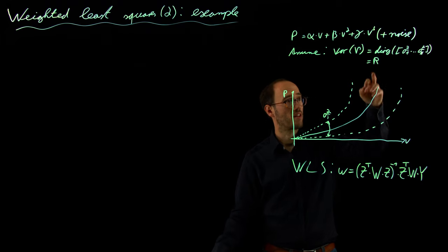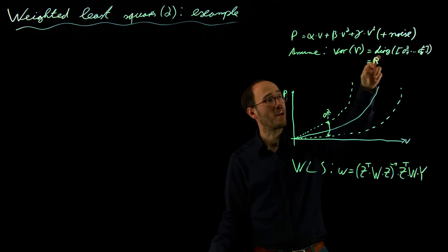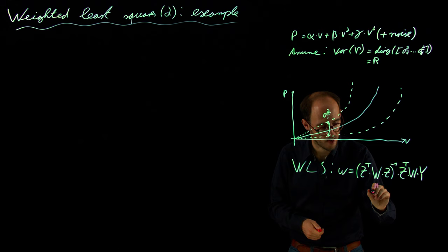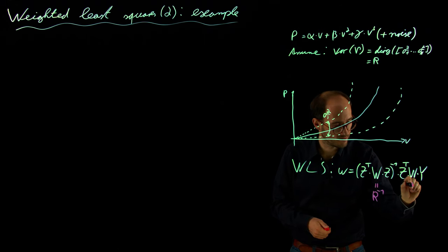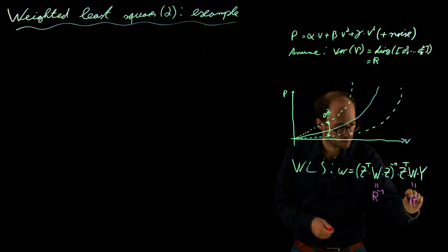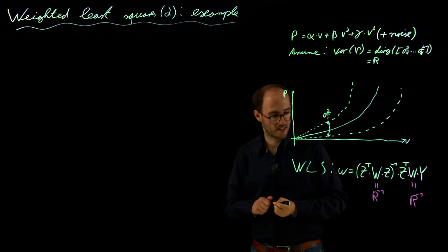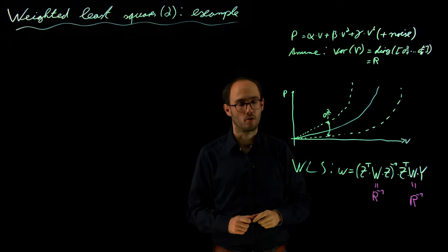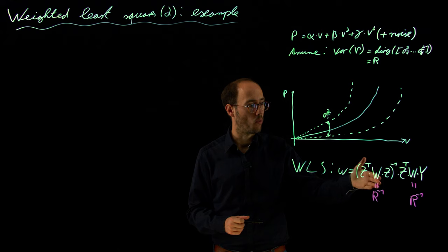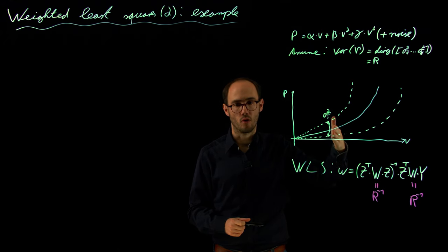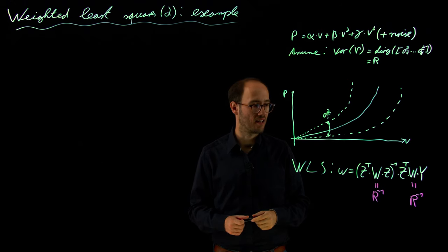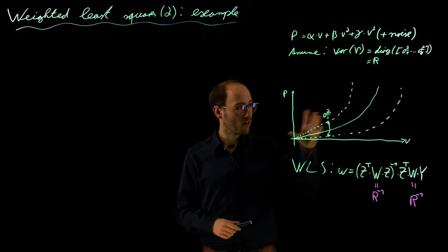So as we assume, this is of course also an assumption that we have access to this covariance matrix of our noise, we can basically set this weighting matrix Z inverse. And that basically means that depending on the noise level depicted here by the covariance, we will basically weight data points which are subject to more noise less than those which are subject to little noise levels.